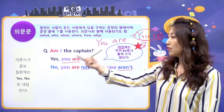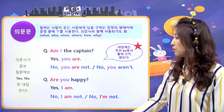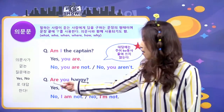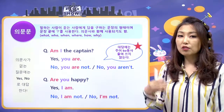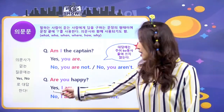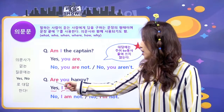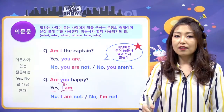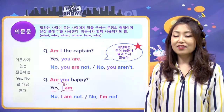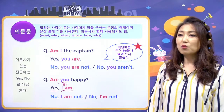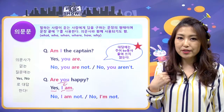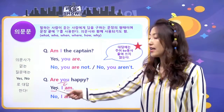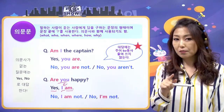내가 물었으니까 너라고 답하잖아요. 그러면 이번엔 니가 물었으면 내가 라고 답해야 되는 거죠. 'Are you happy?', 너는 행복하니? 그랬더니 한국어도 '야, 너 기분 좋아?'라고 물어보면 '응, 나 기분 좋아'라고 대답하잖아요. 영어도 마찬가지예요. 'Are you happy?'에 'Yes, I am'이라고 대답하구요. 항상 비동사는 앞에 주어와 맞춰서 씁니다.